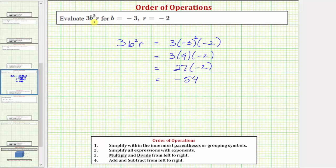So the expression 3b²r is equal to negative 54 when b equals negative three and r equals negative two.